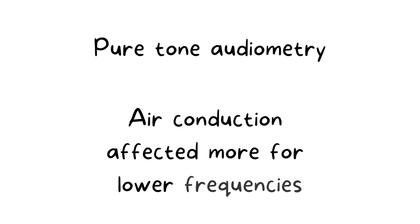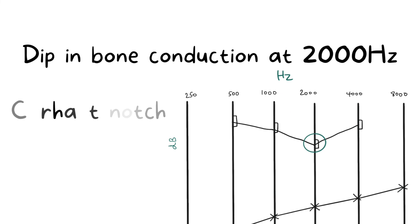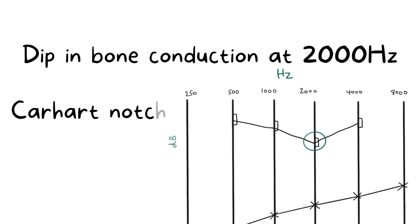Pure tone audiometry reveals that air conduction is affected in lower frequencies of sounds. There is an interesting finding in bone conduction: there is a dip at the frequency of 2000 Hz in bone conduction and it is called the Carhart notch. This is seen in otosclerosis and it usually disappears after surgery.